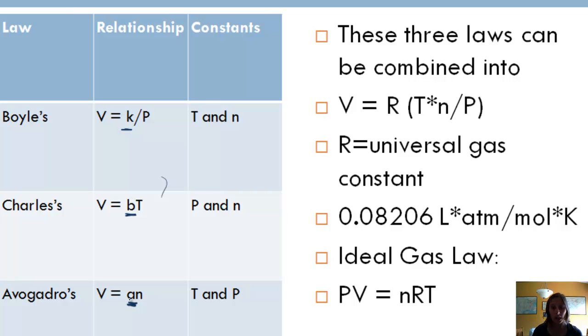So V equals R times T times N over P. R is considered the universal gas constant, it's a set value. For our purposes right now, R is going to represent 0.08206 liter atmospheres per mole kelvin. So we've got pressure, volume, number of moles, and temperature.